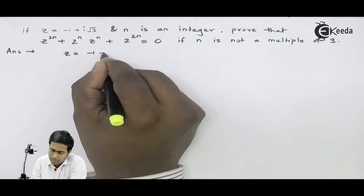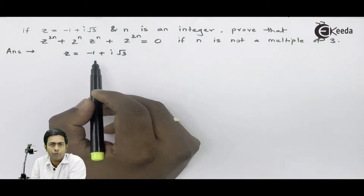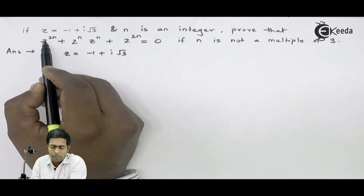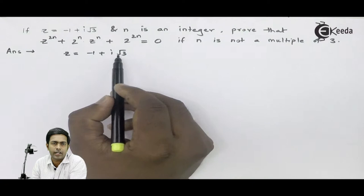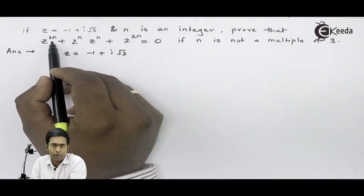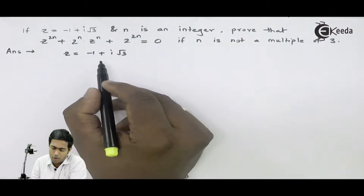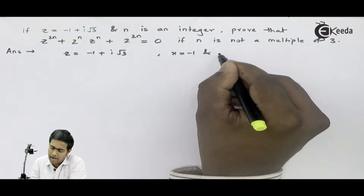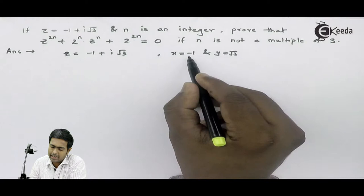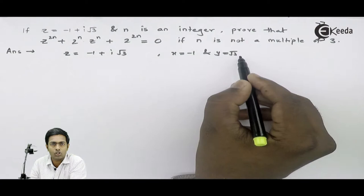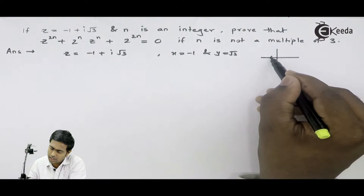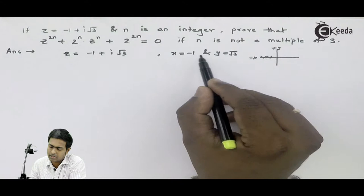Here z is given as minus 1 plus i root 3. If we try to find the first term z raised to 2n — that is the power of a complex number — using Cartesian form it is not possible. According to De Moivre's theorem, if you want to find a power, the number has to be in polar form. So we will convert the given number to polar form. From this number we can say that x is equal to minus 1 and y is equal to root 3. Since x is negative and y is positive, this number belongs to the second quadrant.